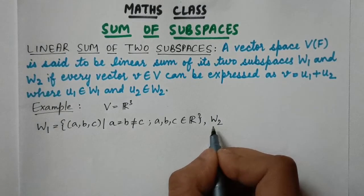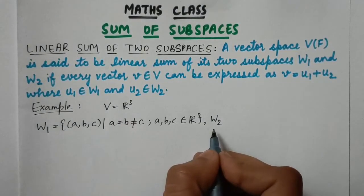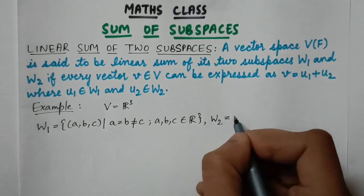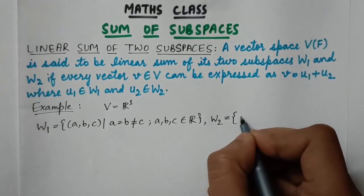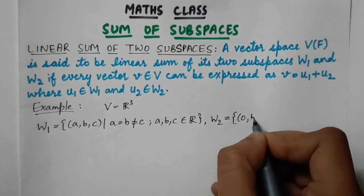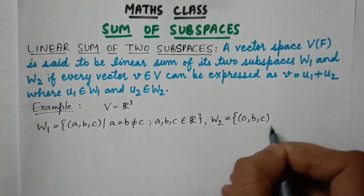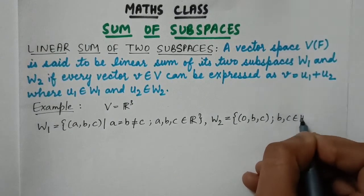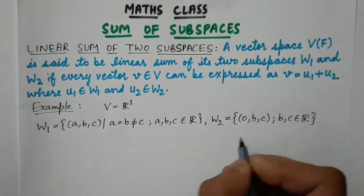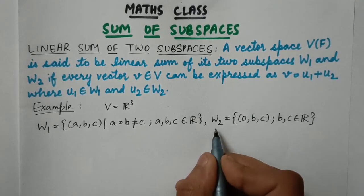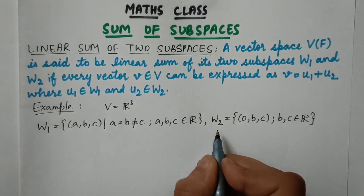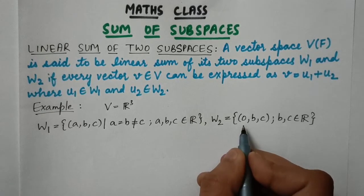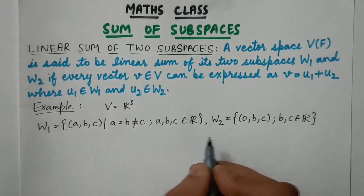Now suppose there is another subspace W2 of V containing elements in the form (0, b, c), where b and c are real numbers. In W2, the first number is always 0.